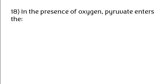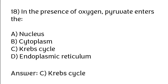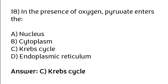In the presence of oxygen, pyruvate enters which of the following? Options: nucleus, cytoplasm, Krebs cycle, endoplasmic reticulum. The correct answer is option C — in the presence of oxygen, pyruvate enters the Krebs cycle.